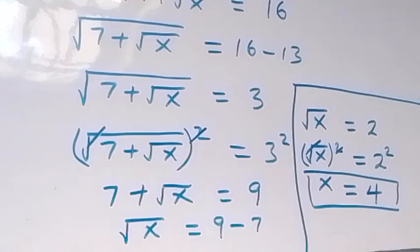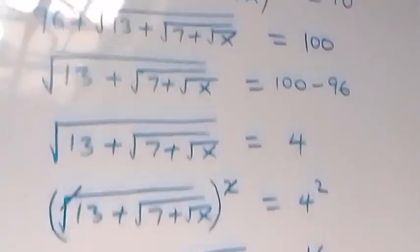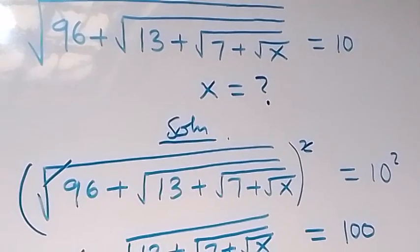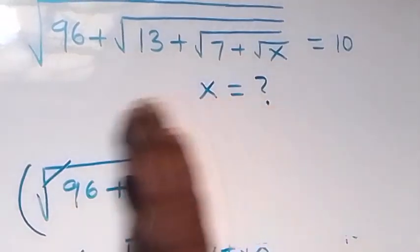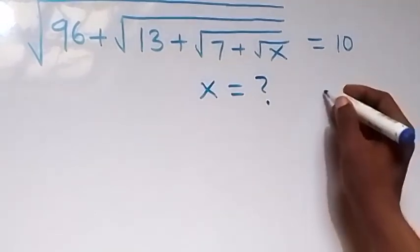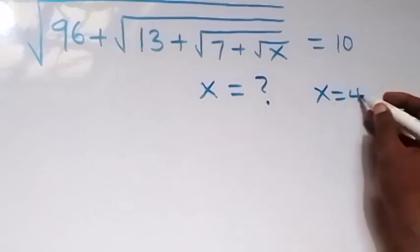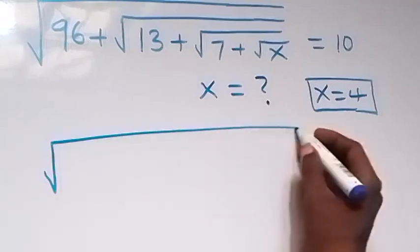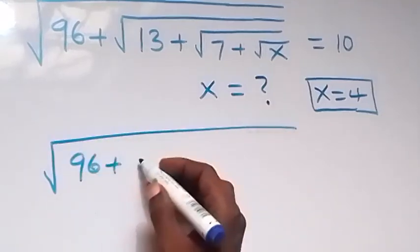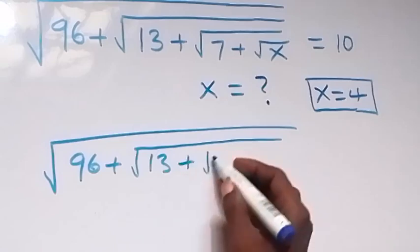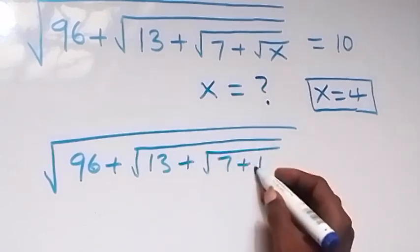Now let's check if this satisfies the given problem. From what is given, which is square root of 96 plus square root of 13 plus square root of 7 plus square root of x, and here we got x to be equal to 4. Now let's substitute x equals 4 here, and this will become square root of 96 plus square root of 13 plus square root of 7 plus square root of 4.